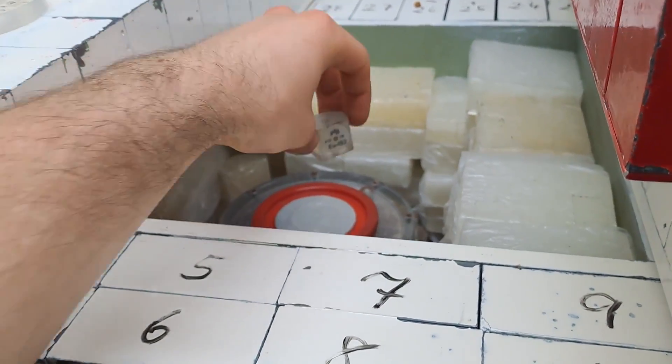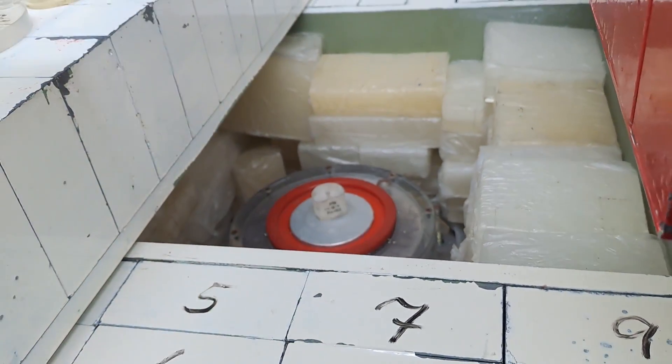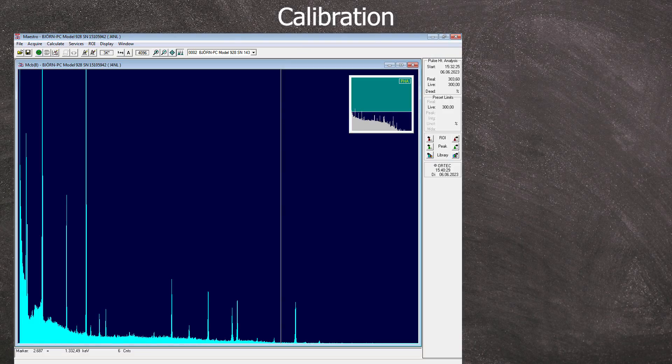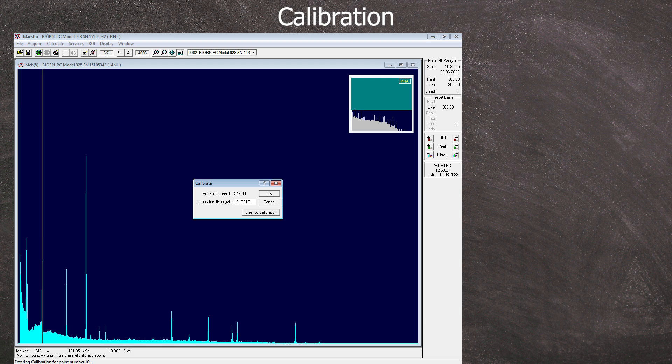Lastly, we measure Europium-152. And there's a lot of work to be done. Europium's variety of peaks from low to high energy makes it a great calibration source. We take the eight peaks with the highest occurrence probability: 121, 244, 344, 778, 964, 1085, 1112, and 1408 keV.